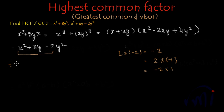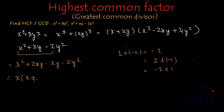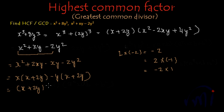So the expression can be written as x square plus 2xy minus xy minus 2y square. From here we take x common to get x times x plus 2y, and from the remaining two terms we take minus y common to get minus y times x plus 2y. Now taking x plus 2y common, we get x plus 2y multiplied by x minus y. So the factors of x square plus xy minus 2y square are x plus 2y multiplied by x minus y.